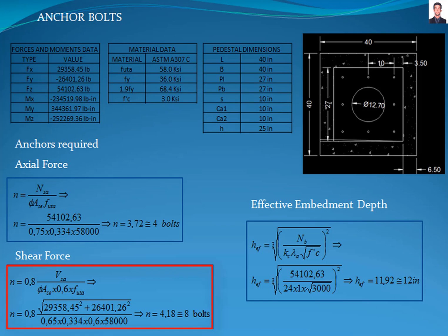We will try a number 6 bolt. Now we proceed to calculate the required effective embedment depth of the anchor by solving HEF from equation 17.6.2.2.1 of the ACI 318 standard, where NP is the axial force, Kc is equal to 24 for cast-in anchors, Fc is the compressive strength of the concrete, and lambda-a is the lightweight modification factor, which is equal to 1 for cast-in anchors, giving a result of 12 inches.